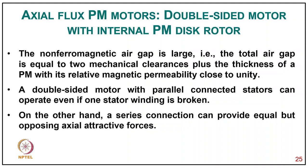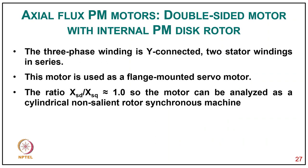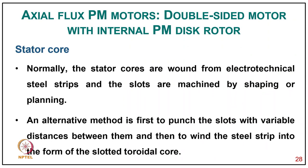A double-sided PM motor with parallel-connected stators can operate even if one stator winding is broken; on the other hand, a series connection can provide equal but opposite axial attractive forces. A practical three-phase, 200 Hz, 3000 rpm double-sided axial flux permanent magnet motor with a built-in brake for electric vehicles is shown with different parts. The three-phase winding is star-connected with two stator windings in series, used as a flange-mounted servo motor. The ratio Xd/Xq equals 1, so the motor can be analyzed as a cylindrical non-salient rotor synchronous machine.